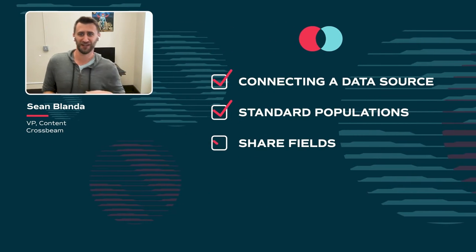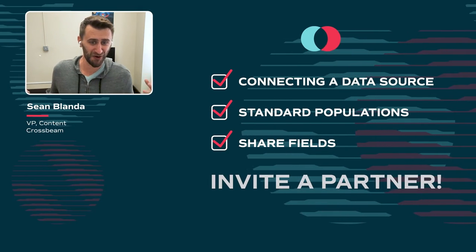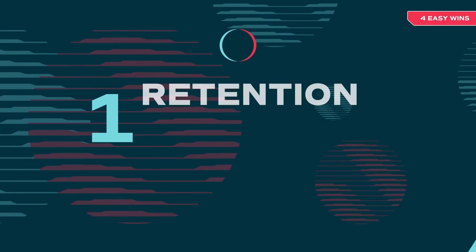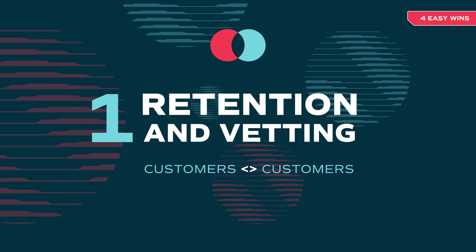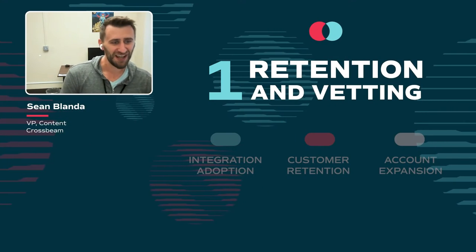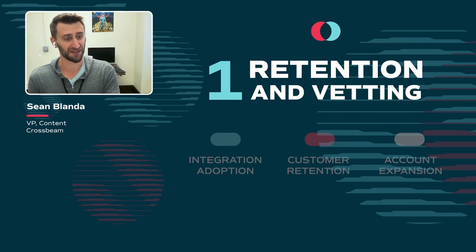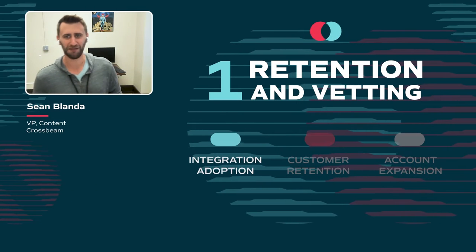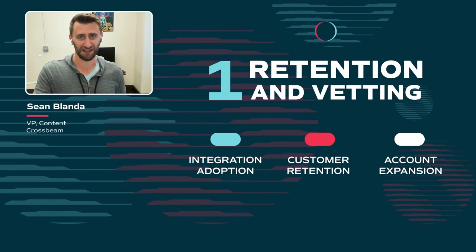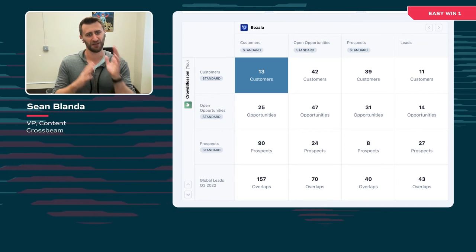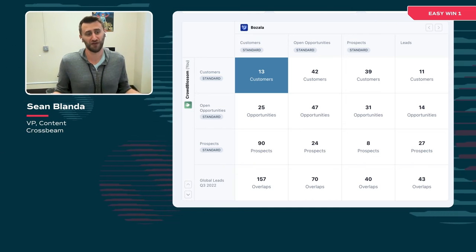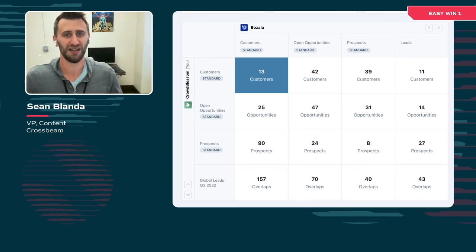Now that we've hit the checklist — you've connected a data source, you have standard populations, you've shared fields — you need to invite your partner. That's where these four easy wins take over. Easy Win Number One is one of the most standard ways to get the most value out of Crossbeam immediately. This win is about retention: optimizing retention as well as vetting possible partners. Use this win if you are measured by integration adoption, customer retention, or account expansion. The heart of this is the customer-to-customer overlap — how many of your customers are also their customers?